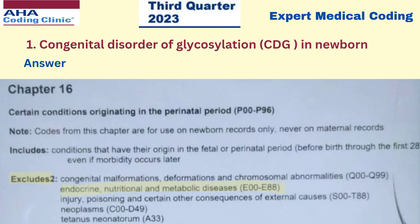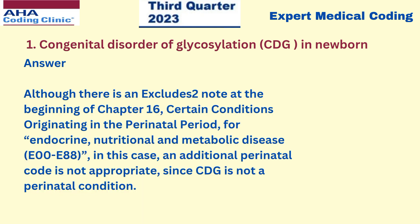If you go to the beginning of Chapter 16, you will see an Excludes 2 note — endocrine, nutritional and metabolic diseases, E series codes E00 to E88. As per the Excludes 2 note, you could technically code both together. But still, we should not code both together, because perinatal conditions are different from congenital conditions. So although there is an Excludes 2 note at the beginning of Chapter 16 for certain conditions originating in the perinatal period alongside endocrine, nutritional, and metabolic diseases, an additional perinatal code is not appropriate since CDG is not a perinatal condition.